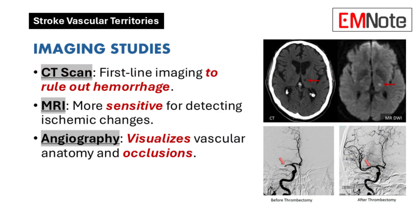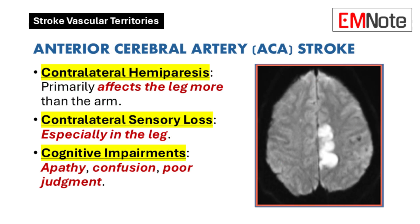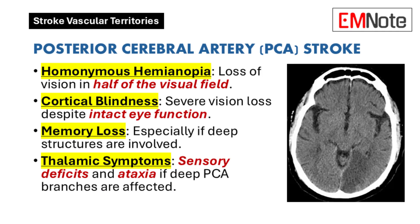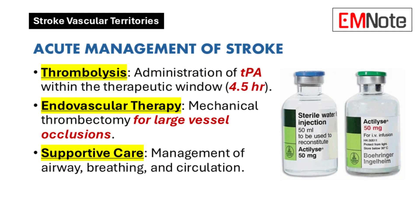How does understanding these vascular territories help us pinpoint the location of a stroke? Think of it as a puzzle — the patient's symptoms are the pieces. By carefully assembling those pieces, we can determine the most likely location. Specific types of weakness, sensory loss, visual problems, or language difficulties all provide valuable clues. Time is brain: the sooner we identify the location and cause of the stroke, the sooner we can initiate the appropriate interventions.